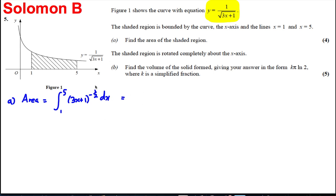Add 1 to the power, divide by that number, and divide by the differential of this bracket. So I'm going to have 3x plus 1 to the half. I'm dividing by a half and I'm dividing by 3. So I'm dividing by a half and dividing by 3. I can think of it like that and I'm working it out between 5 and 1.